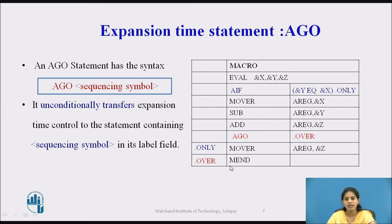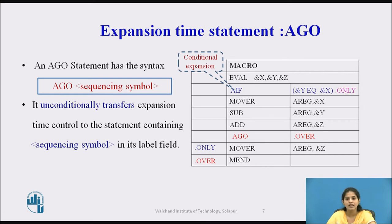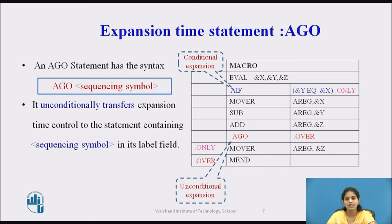In .OVER we specify the macro end statement. The AIF is a conditional expansion and the AGO is the unconditional expansion — the AGO statement transfers control to the sequencing symbol unconditionally, meaning the condition is not checked.